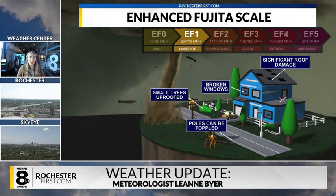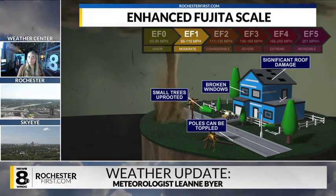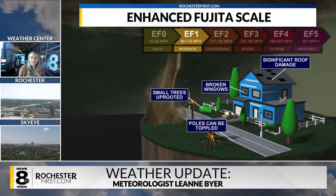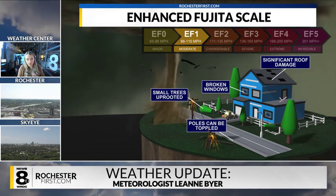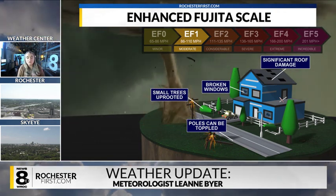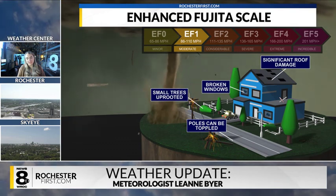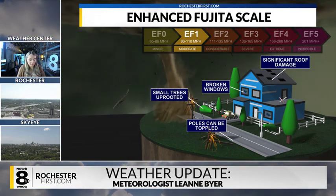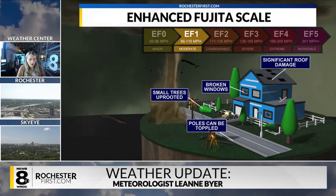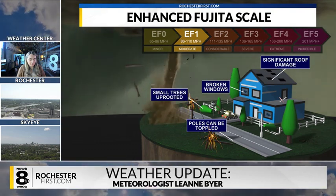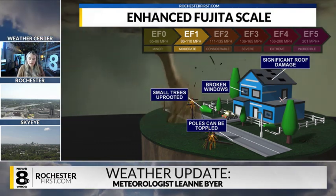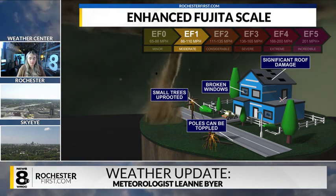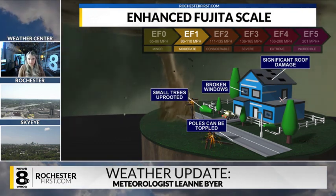That's what meteorologists use to try and categorize these tornadoes, because unfortunately no one is going to be standing inside of a tornado trying to figure out the wind speed. So meteorologists make their best estimate and use context clues from the damage all around the site.